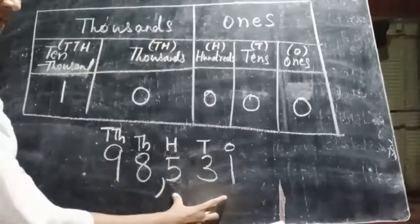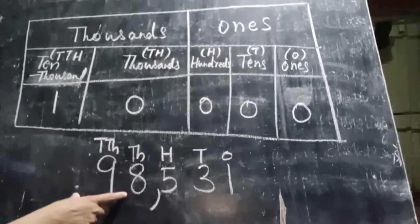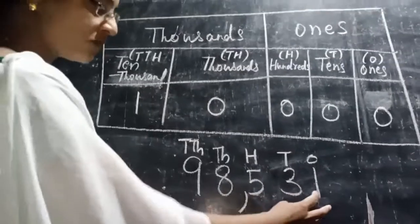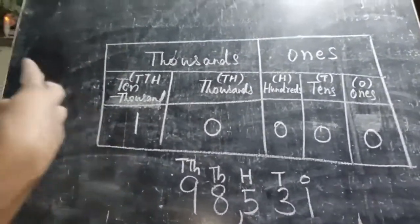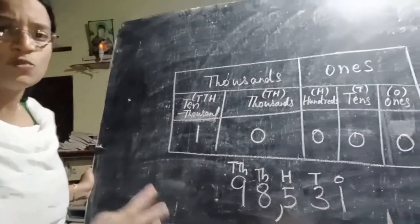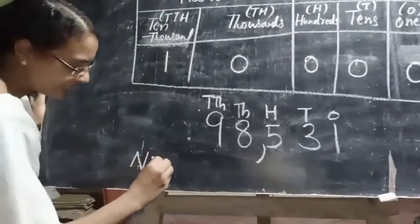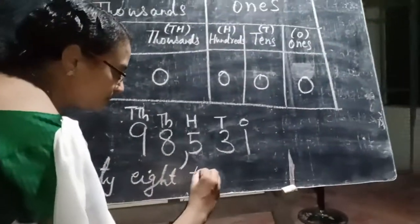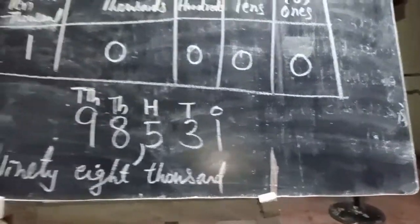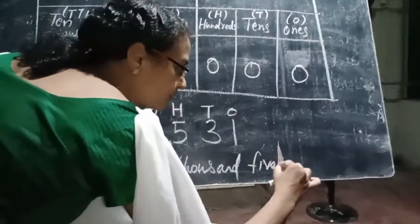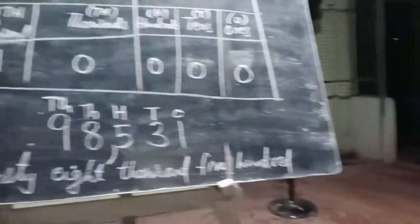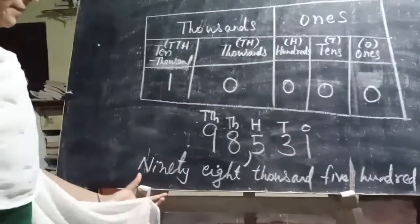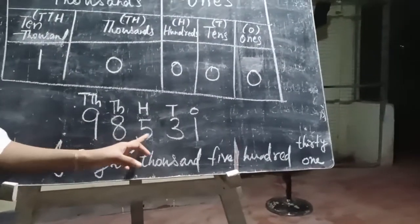The ones period has three places, and the thousands period has two places. Use a comma to separate periods. So the number 98,531 is read as: the thousands period gives ninety-eight thousand, and the ones period gives five hundred thirty-one. The number becomes 98,531.